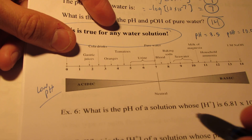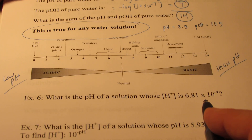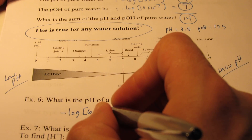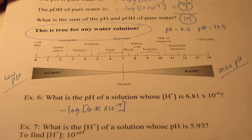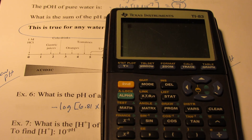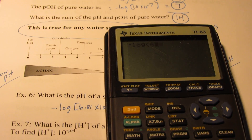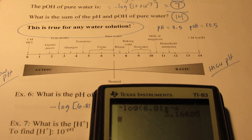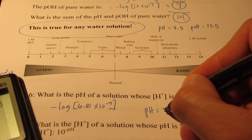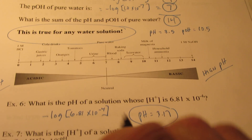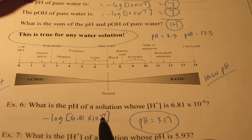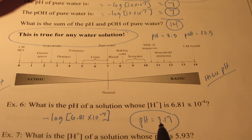Let's work a problem: what is the pH of a solution whose H⁺ concentration is 6.81 × 10⁻⁴? We take the negative log of 6.81 × 10⁻⁴. Entering that in the calculator gives us a pH of 3.17. We could have predicted it would be between 3 and 4, because 6.81 × 10⁻⁴ has a log around −4, but since the coefficient is bigger than 1, it shifts the pH below 4 — so between 3 and 4.